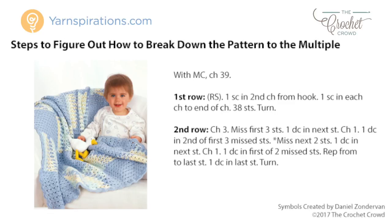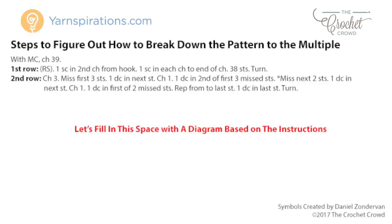The instructions in green are what we have, and I'm looking for where the multiple is appearing. The instructions say with MC — main color — chain 39. You can't tell an actual repeat pattern from that. Row number one says one single crochet in the second chain from the hook and then one single crochet in each all the way to the end — there's no repeat pattern there; it's simply the same stitch all the way across. So the repeat pattern does not appear until the second row. You have to go backwards — figure out row two, then row one, then back to the starting chain. Drawing out 39 stitches is time consuming and not necessary. Your goal is to make a miniature of what you see. The trick is to start on row number two.